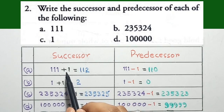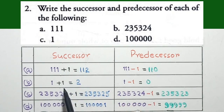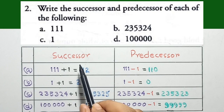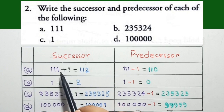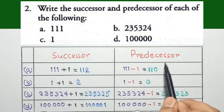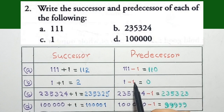For successor, we add 1 to the number — this value will be the successor. And for predecessor, we subtract 1 from the number — this value will be the predecessor.